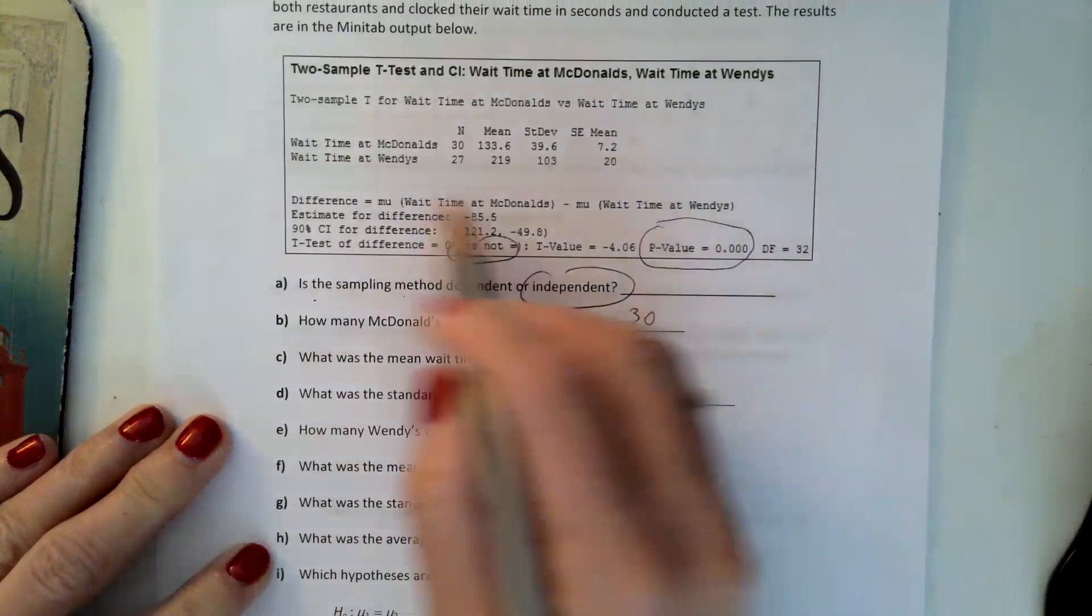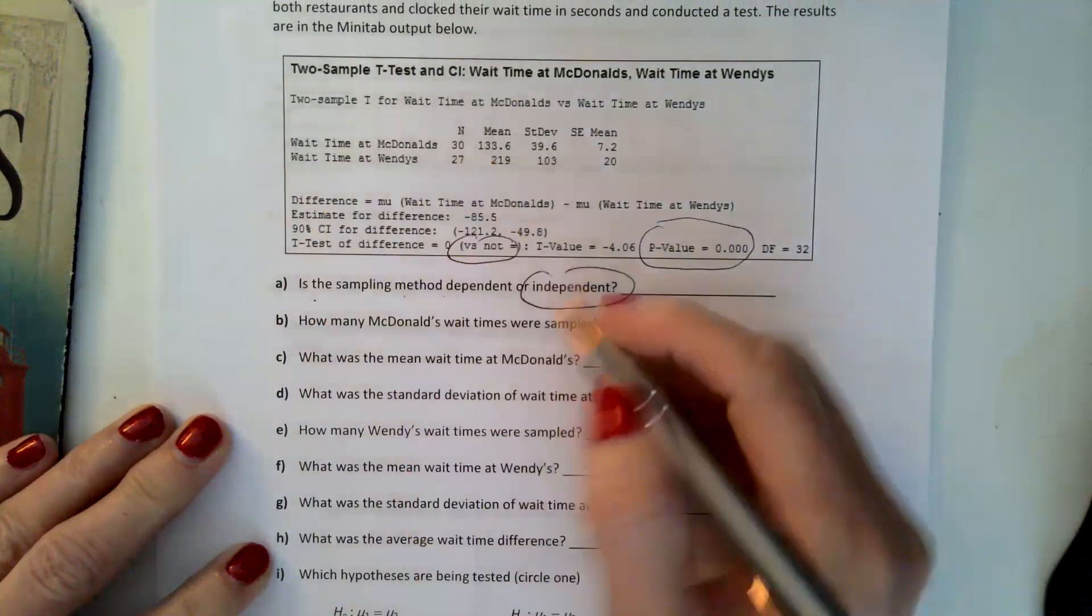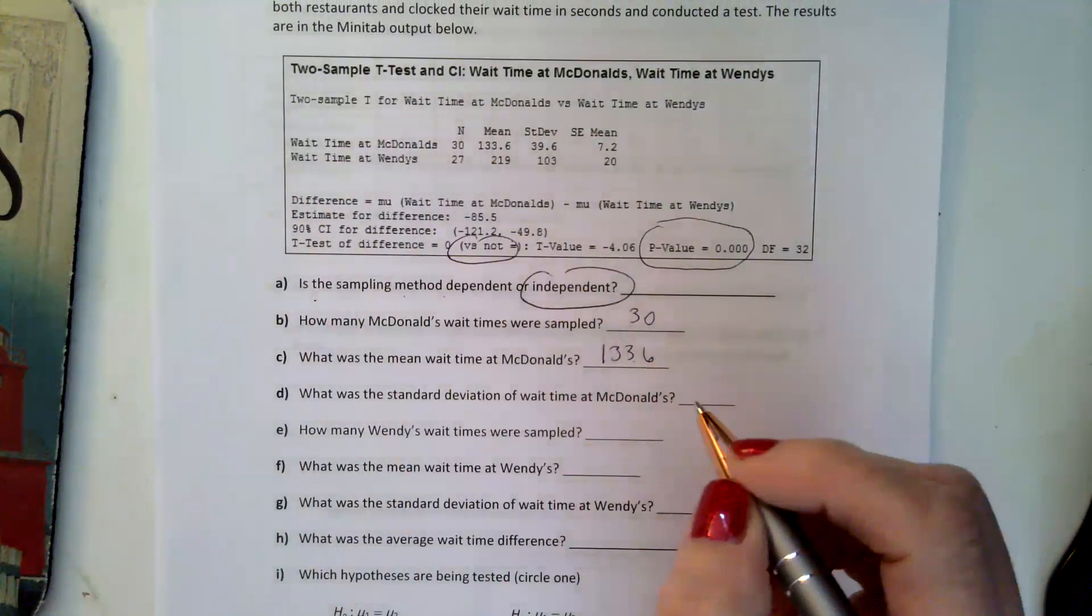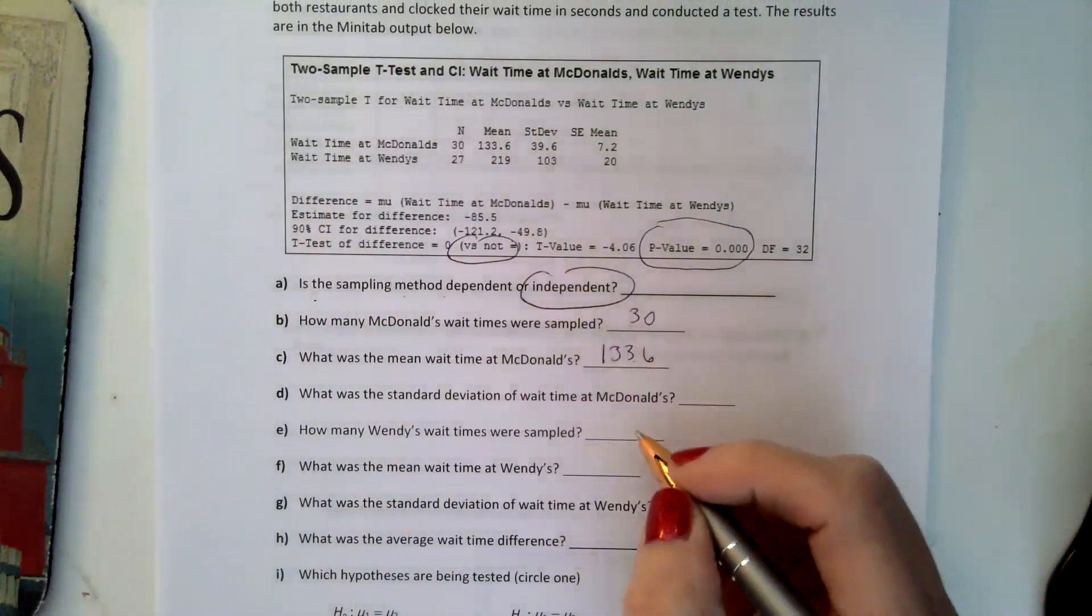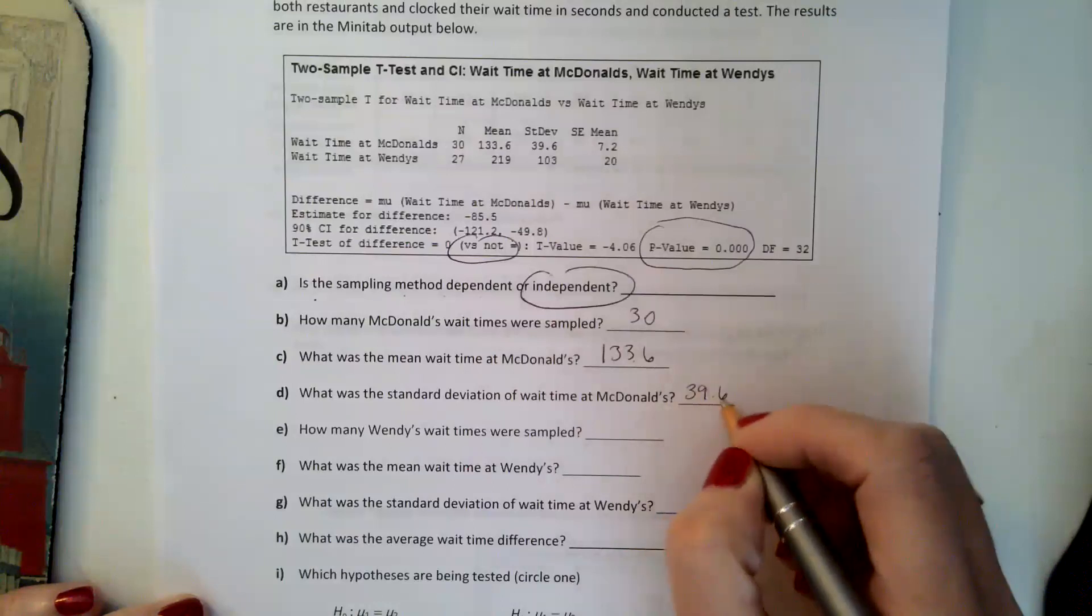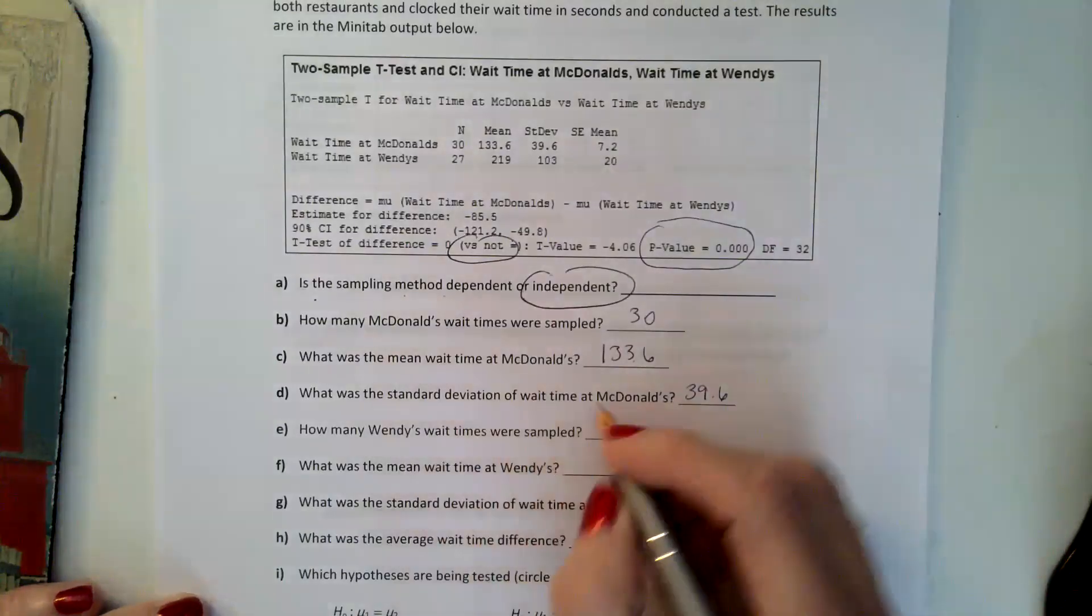What was the mean wait time at McDonald's? 133.6. What was the standard deviation at McDonald's? 39.6.